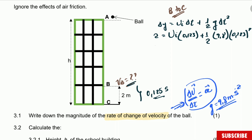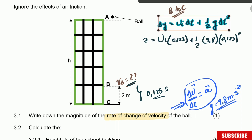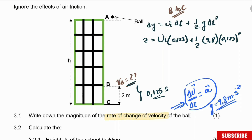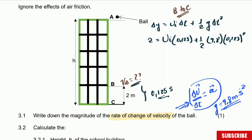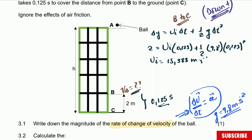When you do this calculation, you will get that the initial velocity is equal to 15.388 meters per second. I didn't write the direction here because the object is only moving down, so down will be positive to make the question easier. So now we have the velocity at point B, and this initial velocity from B to C will be the final velocity from A to B.